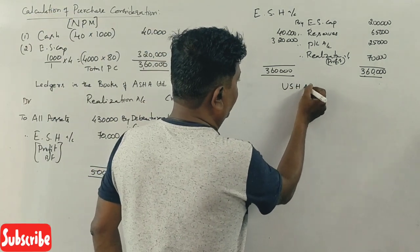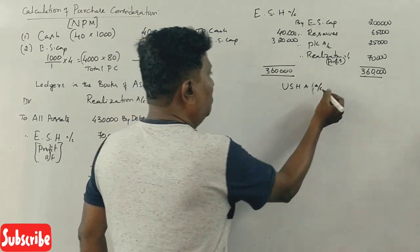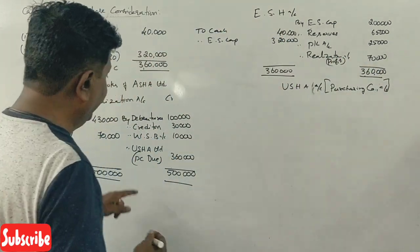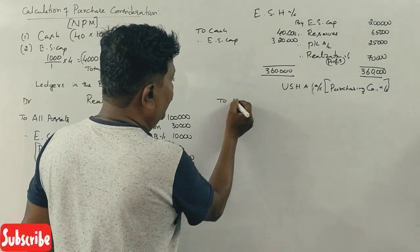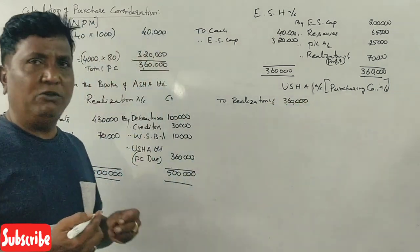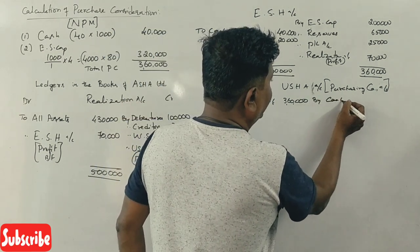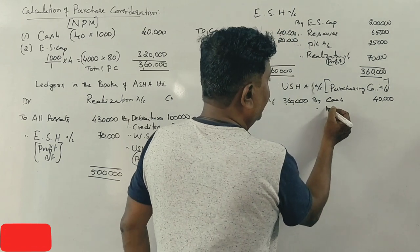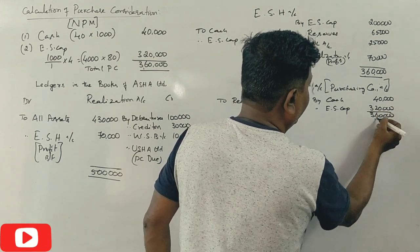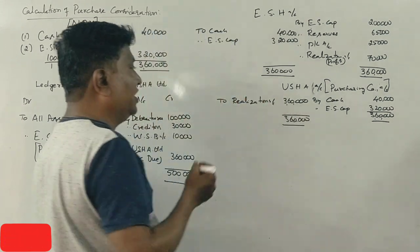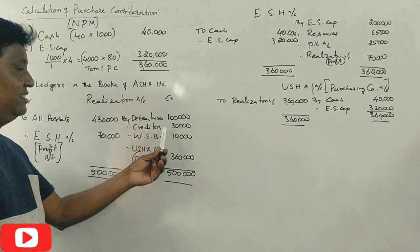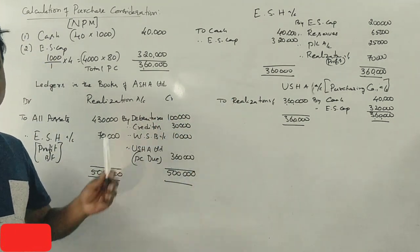We open the Usha Company account — the purchasing company account. On the credit side, it is credited through the realization account at Rs.3,60,000. The share capital component is Rs.3,20,000 and cash is Rs.40,000. The net share capital figure is Rs.3,20,000. Usha company has a liability of Rs.3,60,000 which is transferred, and for that they have paid Rs.3,60,000 of purchase consideration.